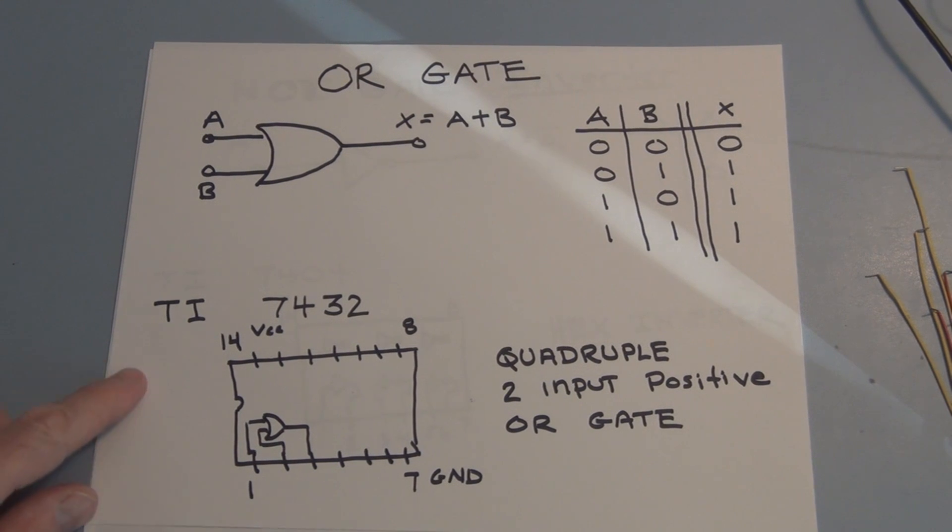The TI chip that I will be using is a 7432, and it's a quadruple two-input positive OR gate. And it's similar in layout to the AND gate except there are four OR gates on this chip.